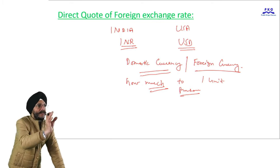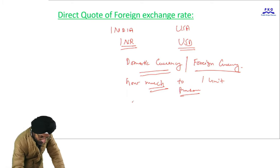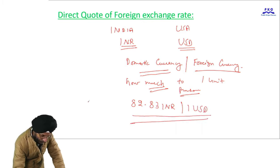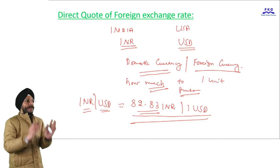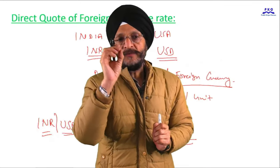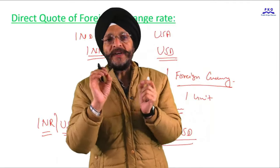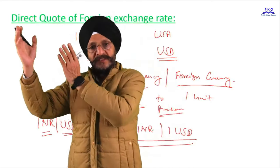Taking the example of India: the direct exchange rate quote for Indian rupee and US dollar is 82.83 INR per 1 USD. This is the direct quote — INR over USD. To get one US dollar, we will be paying 82.83 Indian rupees.